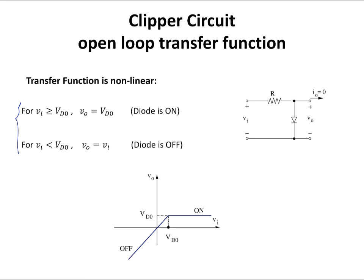Here is the graph for Vout versus VI. From this transfer function, for VI values greater than the threshold value VD0, the output remains constant at VD0 — the output signal does not go beyond this point. For VI values less than this threshold value, Vout and VI are equal.